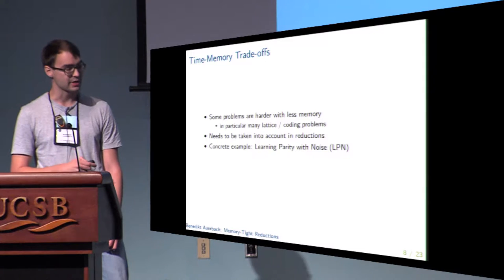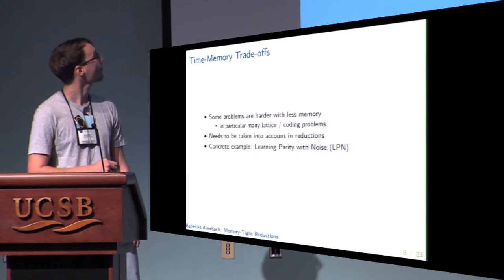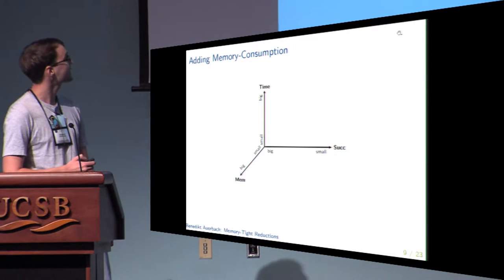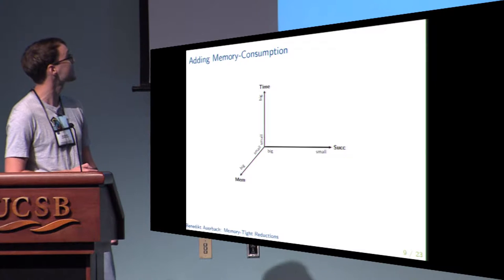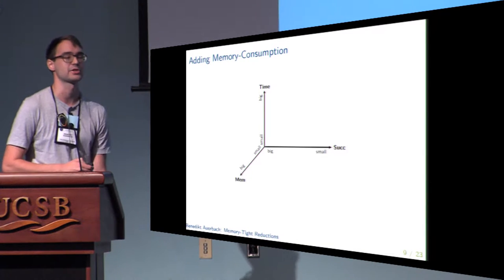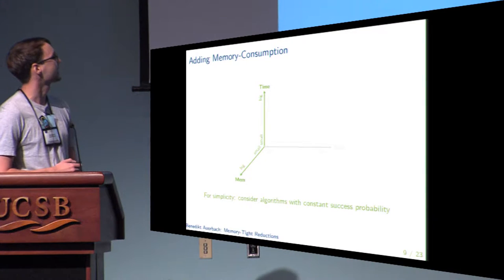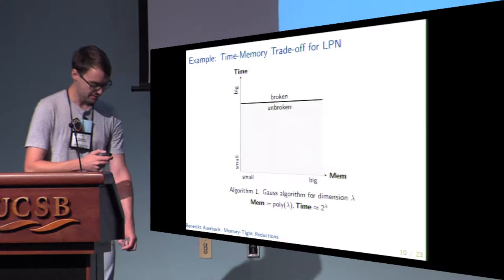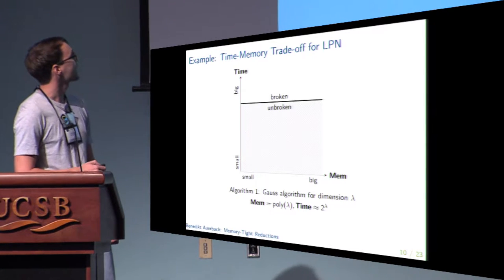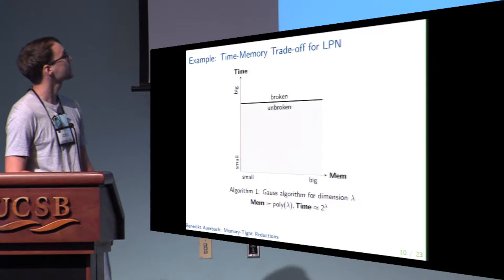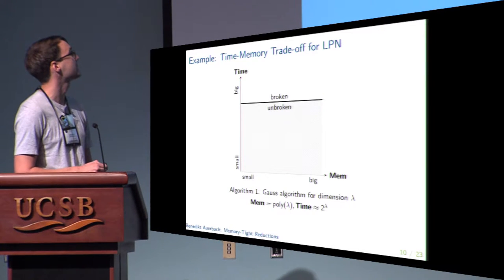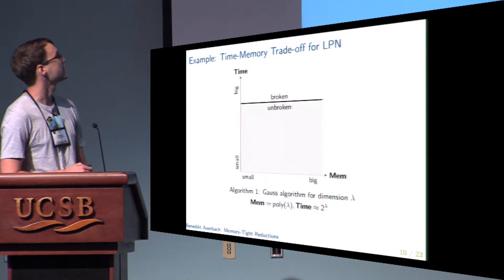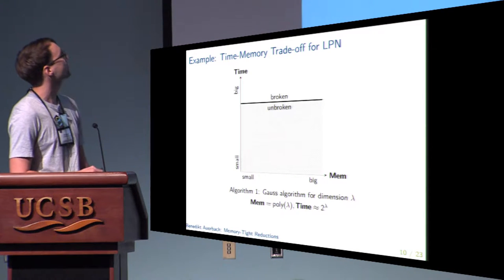We will look at a concrete example, namely the learning parity with noise (LPN) problem. So far we have looked at time-success trade-off plots. When we add memory we would have a three-dimensional time-success-memory trade-off plot. However, to keep things two-dimensional I will only consider algorithms having a constant success probability. The time-memory trade-off plot has two axes: the x-axis indicates memory consumption. If a point lies in the area labeled unbroken, there are no algorithms known which solve instances of LPN in the corresponding time and memory.